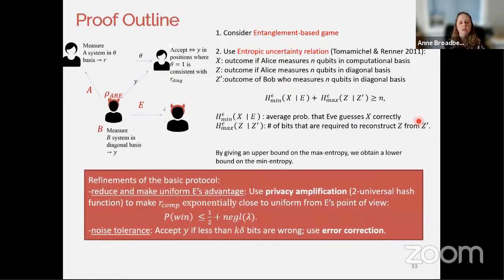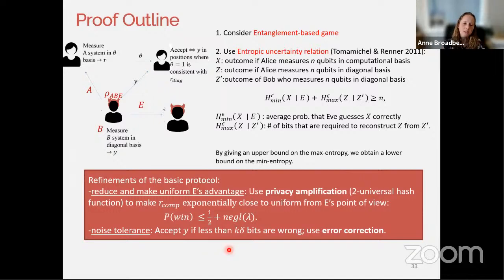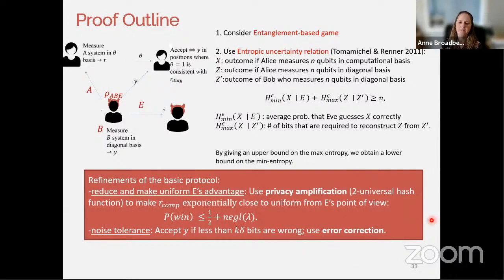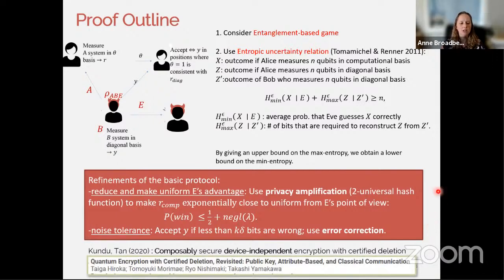Similar to QKD, we give an upper bound on the max-entropy based on the acceptance probability of the proof of deletion, which gives a lower bound on the min-entropy and shows that Eve has low information on the message. Using privacy amplification — same as in QKD — enables reducing and making uniform the adversary's advantage. This protocol also inherits the noise tolerance from QKD security proofs, so the originator will accept the proof of deletion if fewer than k-delta bits are wrong, using error correction to compensate. Follow-up work includes papers by Kundu and Tan and talks at this week's QCrypt.